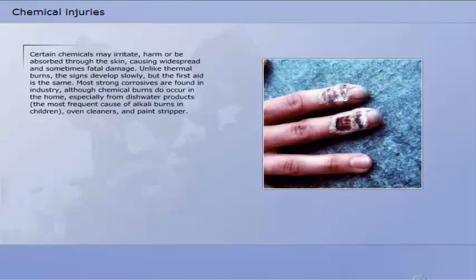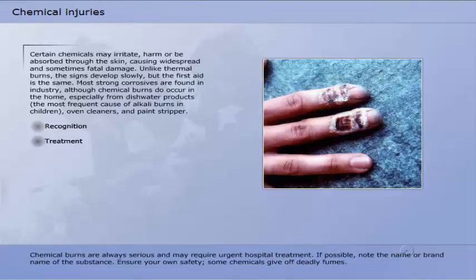Certain chemicals may irritate, harm or be absorbed through the skin, causing widespread and sometimes fatal damage. Unlike thermal burns, the signs develop slowly, but the first aid is the same. Most strong corrosives are found in industry, although chemical burns do occur in the home, especially from dishwasher products — the most frequent cause of alkali burns in children — oven cleaners and paint stripper. Chemical burns are always serious and may require urgent hospital treatment. If possible, note the name or brand name of the substance. Ensure your own safety, as some chemicals give off deadly fumes.